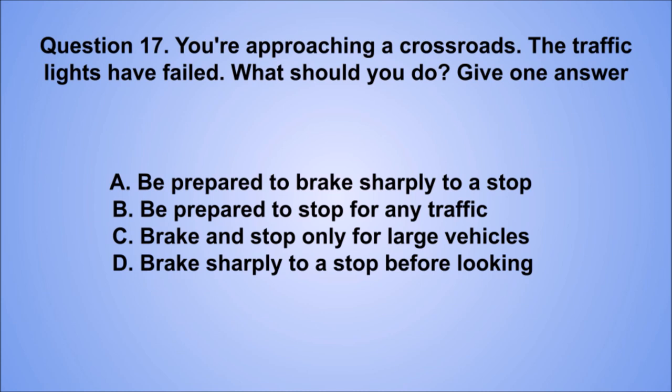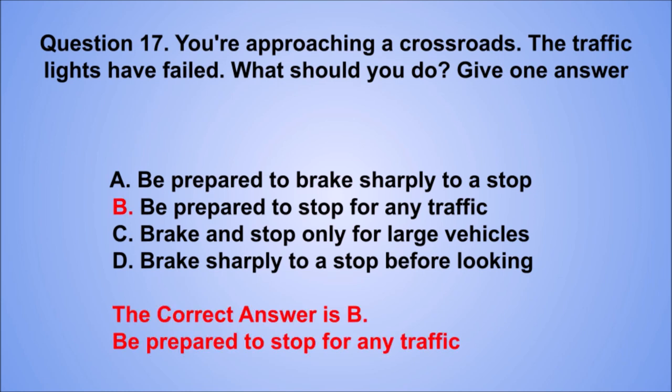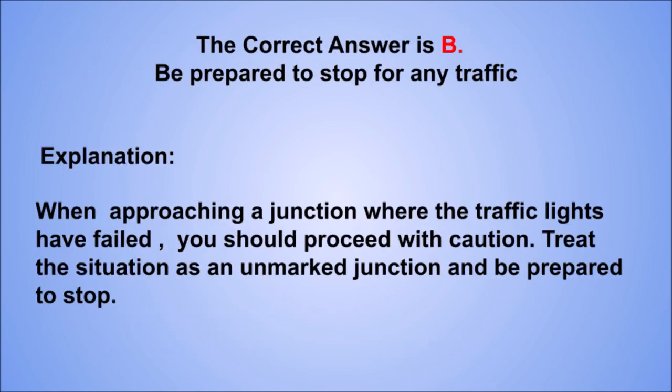Question 17. You're approaching a crossroads. The traffic lights have failed. What should you do? Give one answer. A. Be prepared to brake sharply to a stop. B. Be prepared to stop for any traffic. C. Brake and stop only for large vehicles. D. Brake sharply to a stop before looking. The correct answer is B, be prepared to stop for any traffic. When approaching a junction where the traffic lights have failed, you should proceed with caution. Treat the situation as an unmarked junction and be prepared to stop.